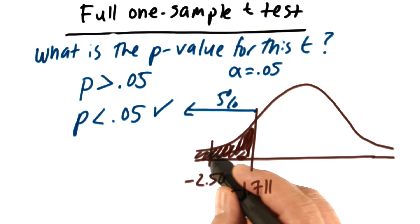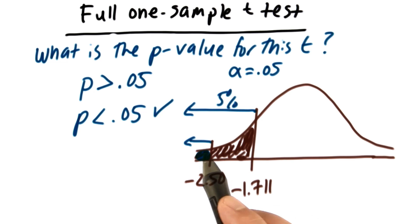The p-value is this area right here, cut off by our value of t. So remember a p-value is just the proportion of scores that fall beyond a score.